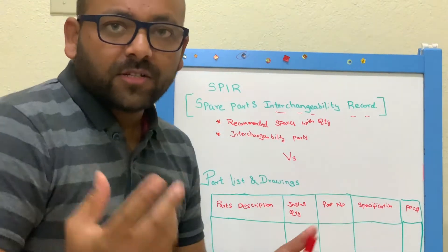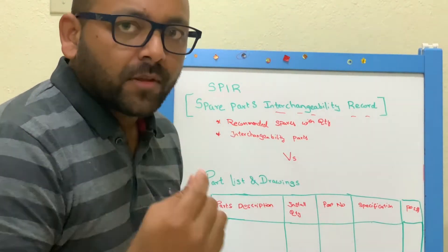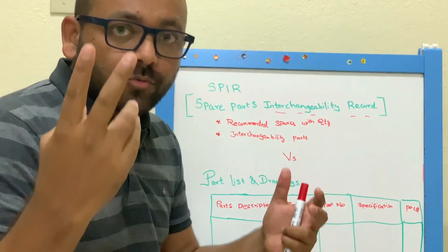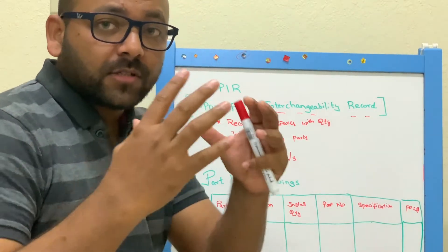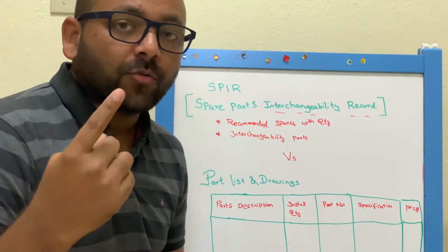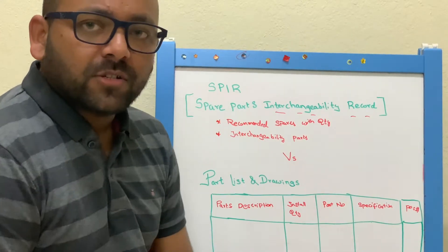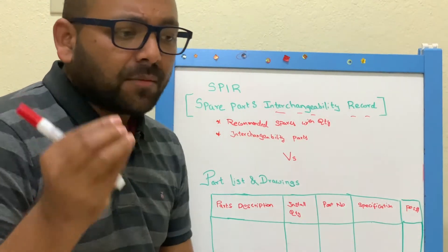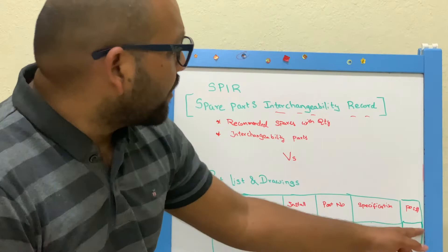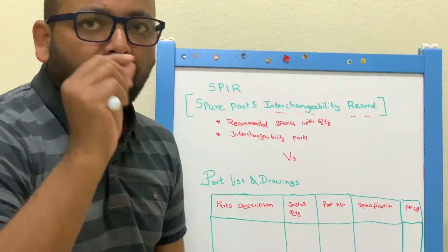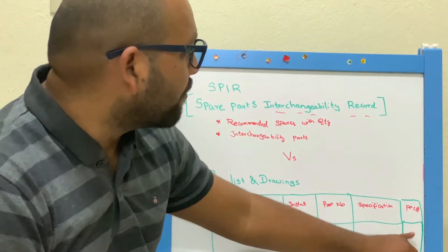The install quantity — for example, the mechanical seal for an overhang pump has an install quantity of one. For bearings, it may be listed as two. For the shaft, the install quantity is one. The part number is the manufacturer's part number furnished by the manufacturer. The specification may mention special material requirements for the casing. The position number is the mapping number indicating the part in the drawings.